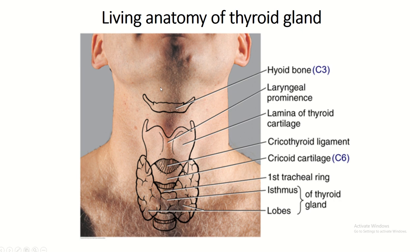Living anatomy of the thyroid gland. This is the hyoid bone, situated at the level of the cervical three vertebra. This is the laryngeal prominence. This is the lamina of the thyroid cartilage, and this is the cricoid cartilage. The lower border of the cricoid cartilage is situated at the level of cervical six vertebra, and there are first, second, and third tracheal rings present within the neck. And this is the thyroid gland — it has an isthmus and two lobes.